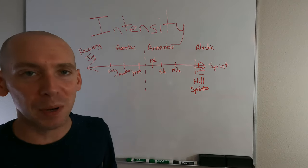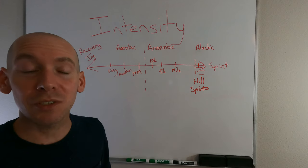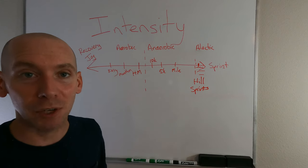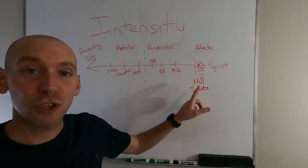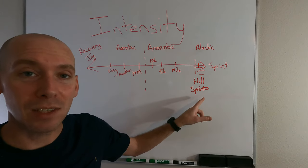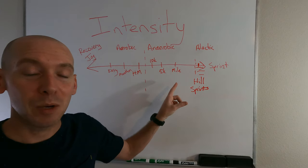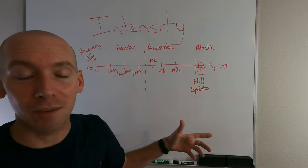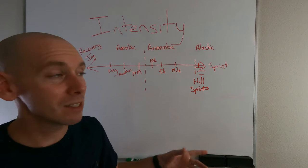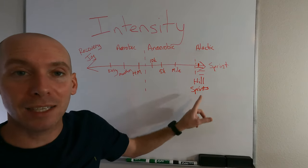But most hill sprints are done at maximum effort, and they're so short and so intense that you don't even get to the point of being anaerobic because you're not running long enough. So at only 8 to 10 seconds at max intensity, these are actually alactic.